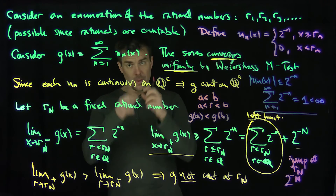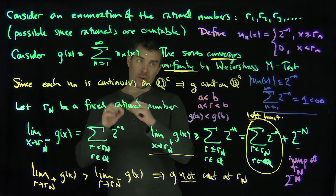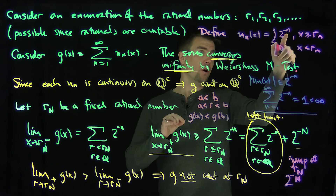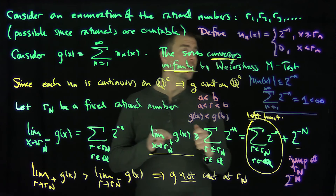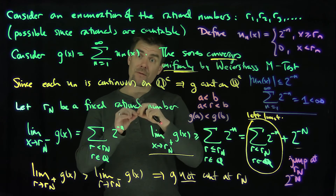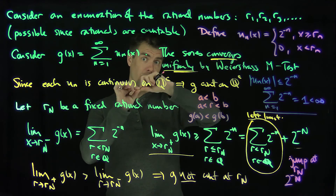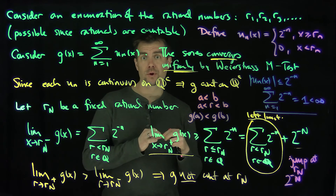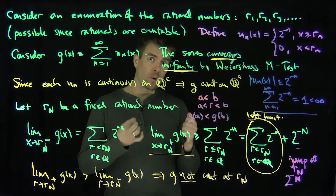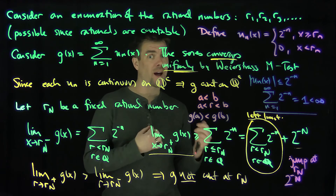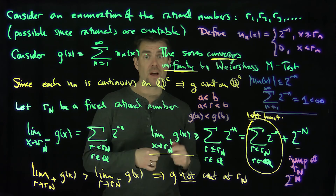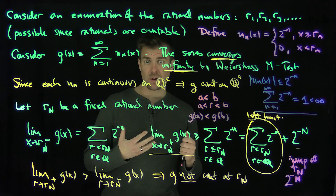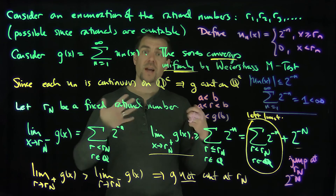The jump size at r_n is 2 to the power negative n. This function is greater than or equal to zero, starts at zero, and increments all the way up — the sum over all rational numbers is the sum as n goes from 1 to infinity of 2 to the negative n, which equals 1. So what we have here is a cumulative distribution function: a monotone increasing function that jumps at every rational number by 1 over 2 to some power, and all those jumps sum to 1. This function is continuous on the irrationals, discontinuous on the rationals, and monotone. Thank you very much.